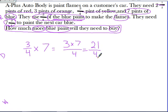I have to tell myself, what do I know about 4s and the multiples of 4s that can get me close to 21? I know that 4 times 5 will give me 20. To get to 21, that's just one more piece out of 4. So they've used 5 and 1/4 pints. They've used this part for flames.